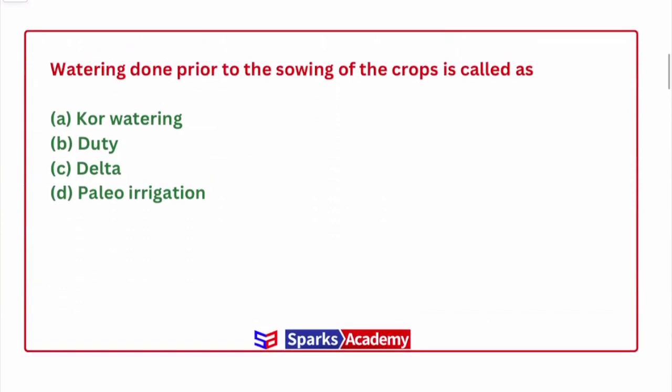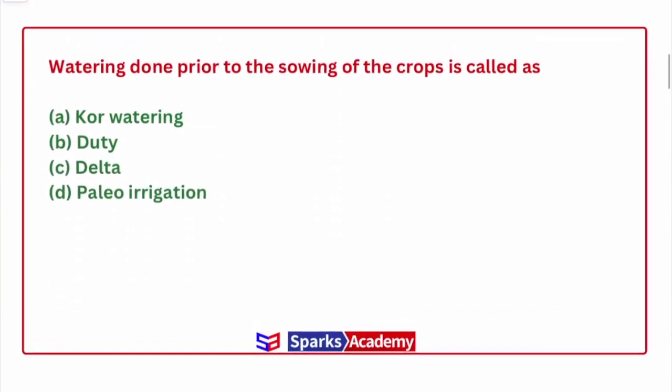For SSE JAE, irrigation engineering has a small but confined syllabus, and within that syllabus we can score maximum marks. So don't ignore irrigation engineering in exam preparation. Basic questions like 'watering done prior to the sowing of crops is called as?' appear frequently. Once we know the basic terms, within a fraction of a second we can answer these questions. So let's define each term.